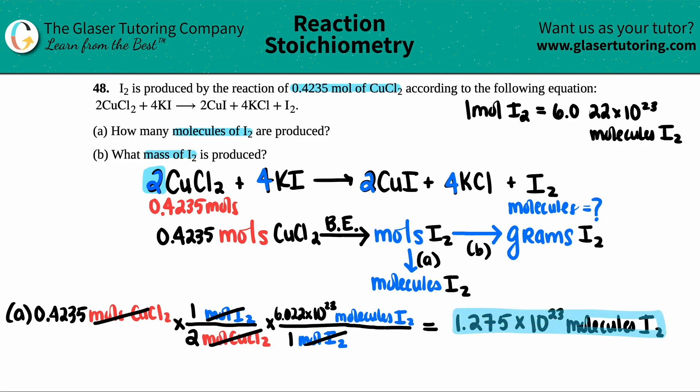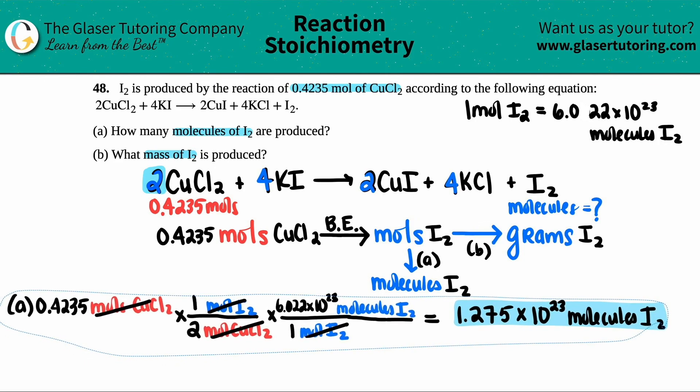So basically meaning, if you started off with 0.4235 moles, you will produce a lot of molecules, 1.275 times 10 to the 23rd molecules.